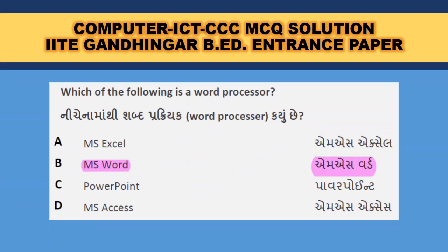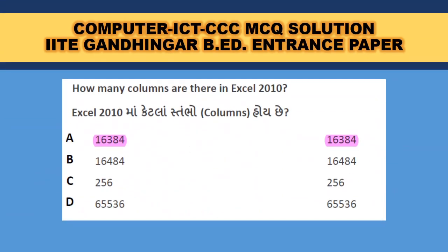Which of the following is a word processor? MS Word — you do editing and formatting with words and text, so MS Word is the word processor; B is the correct answer. Excel 2010 has how many columns? Excel 2010 has 16,384 columns. Mind well — in Excel 2003 there were only 256 columns.